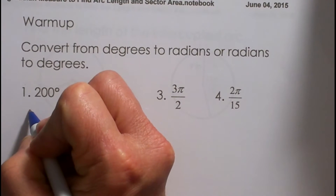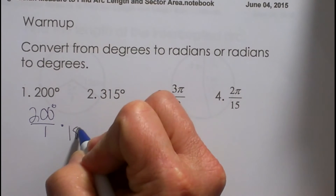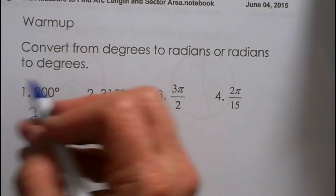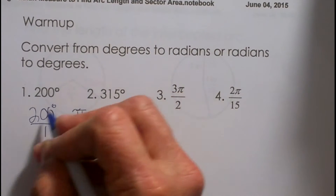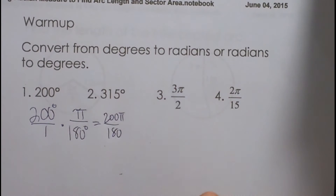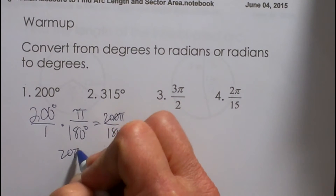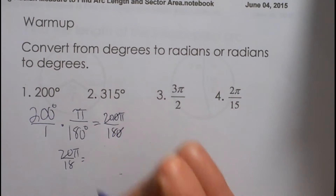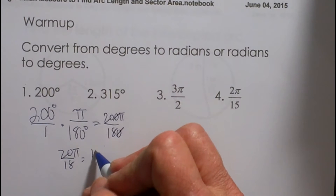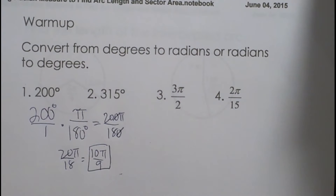200 degrees is how many radians? Our conversion is 180 degrees is equal to pi radians, which is half of the circle. So you can take that and multiply it together and you end up with 200 pi over 180, then you just have to reduce that. Cross out the zeroes and that gives us 20 pi over 18, reduce by 2, so that is 10 pi ninths — that would be in quadrant 3.